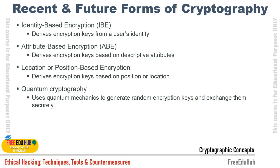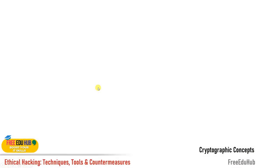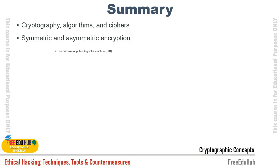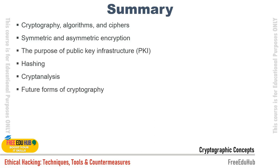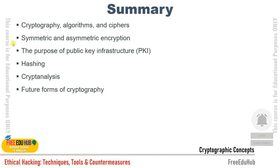That brings us to the end of the chapter on cryptographic concepts. The summary covers: cryptographic algorithms and ciphers, symmetric and asymmetric encryption, the purpose of public key infrastructure, hashing, cryptanalysis, and future forms of cryptography. Thank you very much.